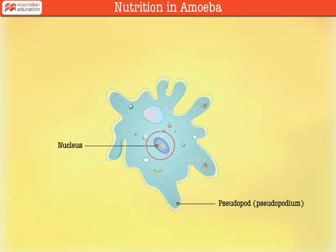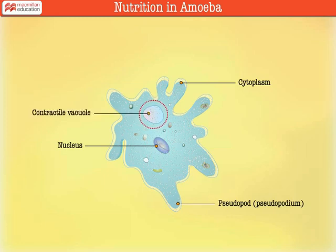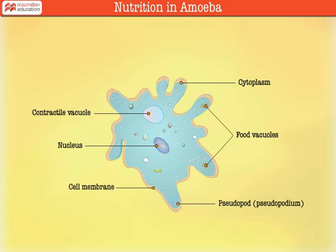There is a distinct nucleus in the cytoplasm of amoeba. The cytoplasm also contains a contractile vacuole, which helps to remove excess water from the body of the animal. There are also one or two food vacuoles scattered in the cytoplasm. The cell is surrounded by a cell membrane.